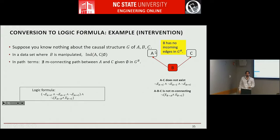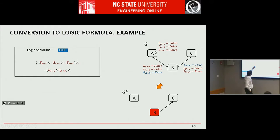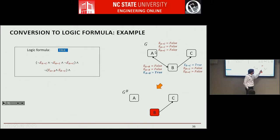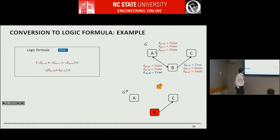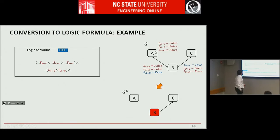This configuration cannot exist because there would always be an M-connecting path. Also, another configuration cannot exist because even when you remove edges into B, you would still have an M-connecting path. You have these two constraints, which you can generate automatically. They're satisfied if a propositional formula is true. You run a satisfiability engine or answer set programming or some other constraint satisfaction engine, which assigns values to these variables — true to some, false to others — corresponding to a causal graph structure that fits your data.